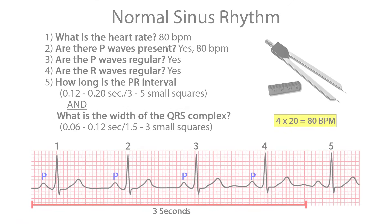Let's evaluate a normal sinus rhythm using these 5 steps. Step 1: What is the heart rate? Count how many R waves in 6 seconds and multiply by 10, or count how many in 3 seconds and multiply by 20. Here we have 4 R waves in 3 seconds times 20 equals 80 beats per minute. Normal heart rate falls between 60 to 100. Step 2: Are there P waves present? Since we have 3 seconds, we'll multiply the number of P waves by 20 — 4 P waves times 20 shows an atrial rate of 80 beats per minute.